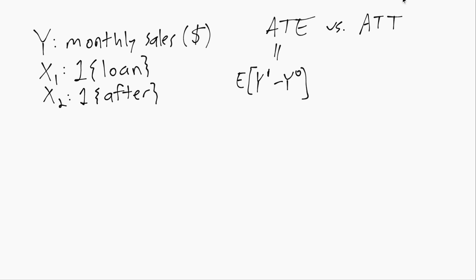And the untreated outcome would be their monthly sales in the parallel universe where they do not receive a loan. In contrast, the ATT is this average treatment effect, but only looking at the subpopulation of businesses who actually, in our universe, do receive a loan.